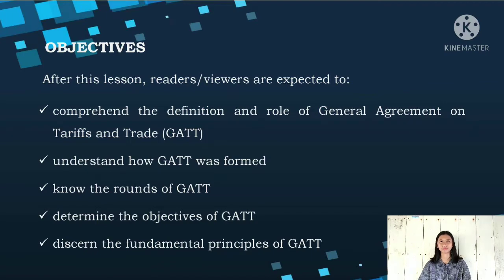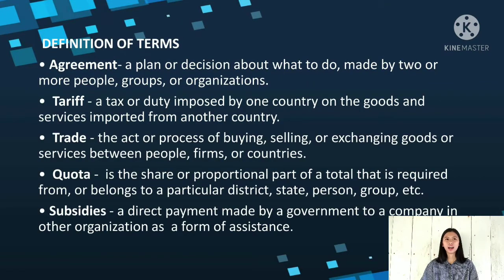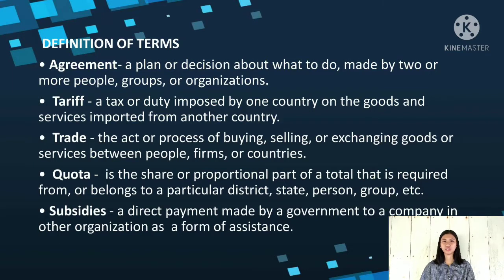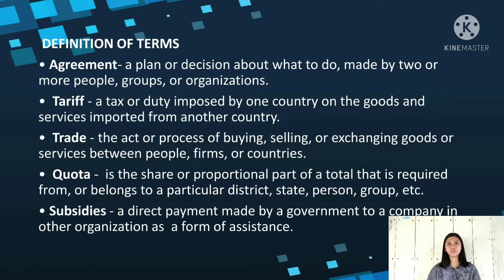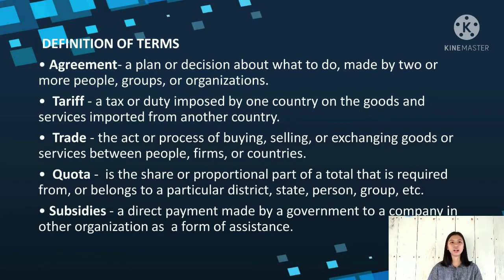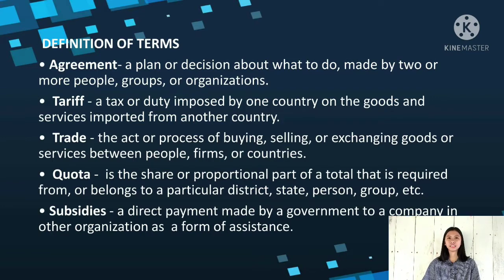These are the definition of terms. Agreement: a plan or decision about what to do, made by two or more people, groups, or organizations. Tariff: a tax or duty imposed by one country on the goods and services imported from another country. Trade: the act or process of buying, selling, or exchanging goods or services between people, firms, or countries. Quota: the share or proportional part of a total that is required from or belongs to a particular district, state, person, or group. Subsidies: a direct payment made by a government to a company or another organization as a form of assistance.